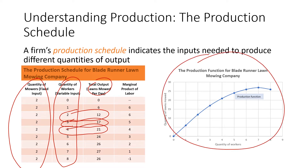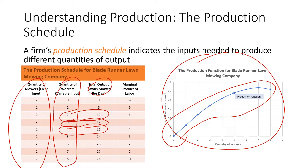Total output is measured by the quantity of lawns Blade Runner can mow per day. With two workers, it can mow 12 lawns per day; with three workers, 17 lawns per day; with four workers, 21 lawns per day; and so on. This information is also displayed graphically as a production function. The curve is the production function — moving rightward on the graph corresponds to hiring more workers, and moving upward corresponds to mowing more lawns.